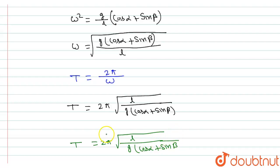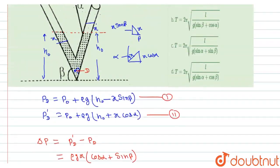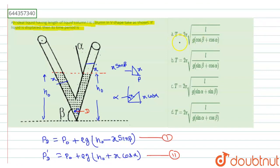According to the options, comparing with T = 2π√[L / g(cosα + sinβ)], option B — which contains cosα and sinβ — is the correct answer for this question. Hope this answered your question. Thank you.